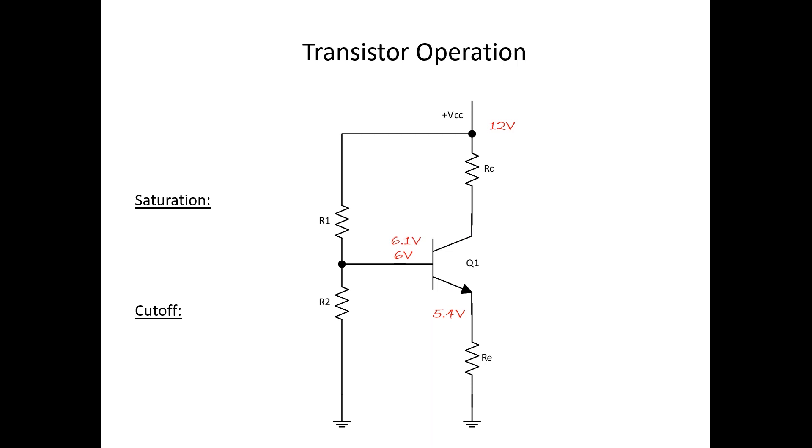Now let's start increasing that base voltage. Let's say we adjust R1 and R2 and we place more than 6 volts. We start increasing that value. What we're doing is increasing the forward bias of the base emitter junction. Anytime we increase the forward bias of the base emitter junction, we are going to increase current flow.